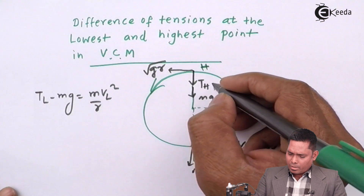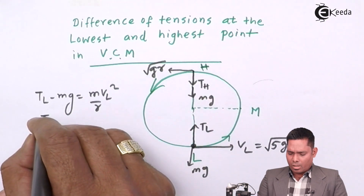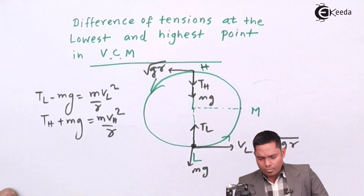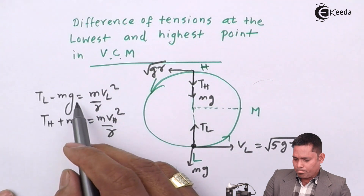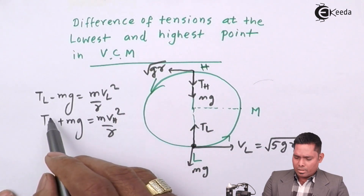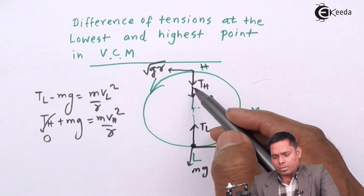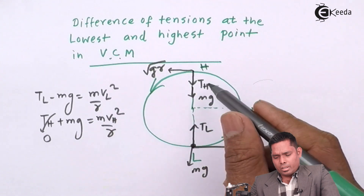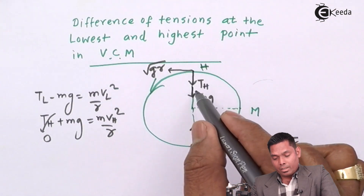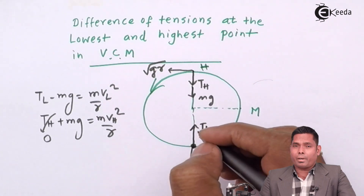Under critical conditions, the tension at the highest point is taken as zero. This is the basis of all the derivations. With T_H = 0, we find the minimum velocity at the highest point to be √(gR). If we don't apply this critical condition, the velocity will not be √(gR).